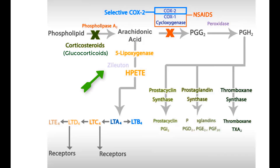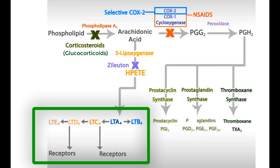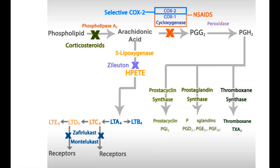Going to the leukotriene pathways, the drug zileuton interferes with the 5-lipoxygenase enzyme, thus inhibiting the production of all inflammatory leukotrienes. Finally, zafirlukast and montelukast are selective competitive inhibitors of leukotriene C4, D4, and E4 receptors.